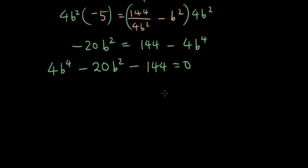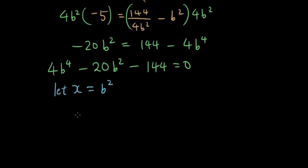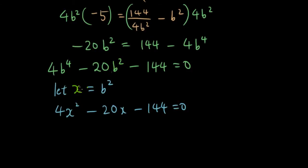Now, you must be asking how do we solve this equation, because it has b to the power of 4 — a quartic — which is very hard to solve. So what we want to do is make up another variable. I'm going to let x equal b squared. Why? Because if I substitute x for b squared, then b to the power of 4 becomes x squared, and I can simply write 4x squared minus 20x minus 144 equals 0, which is a quadratic I can solve.